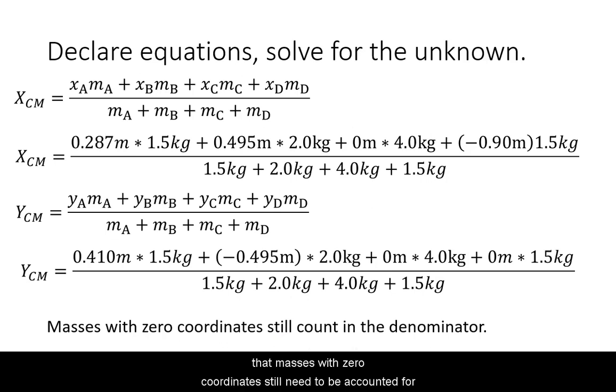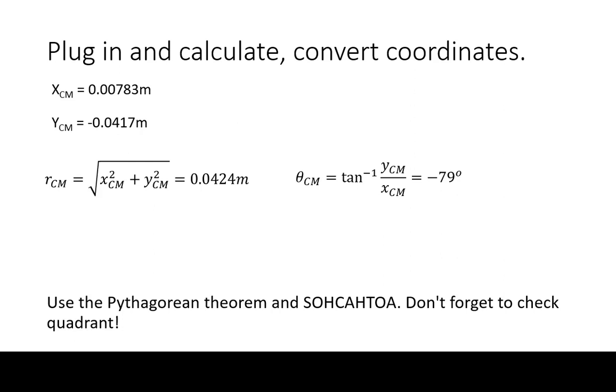Note that masses with zero coordinates still need to be accounted for in the denominator. Plug in to your calculator and record the results first in Cartesian coordinates and then convert that back to polar coordinates. Make sure to check the quadrant for the angle.